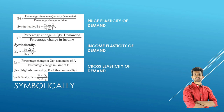Symbolically: Price Elasticity of Demand equals percentage change in quantity demanded upon percentage change in price. Income Elasticity of Demand equals percentage change in quantity demanded upon percentage change in income. Cross Elasticity of Demand equals percentage change in quantity demanded of product A upon percentage change in price of product B.